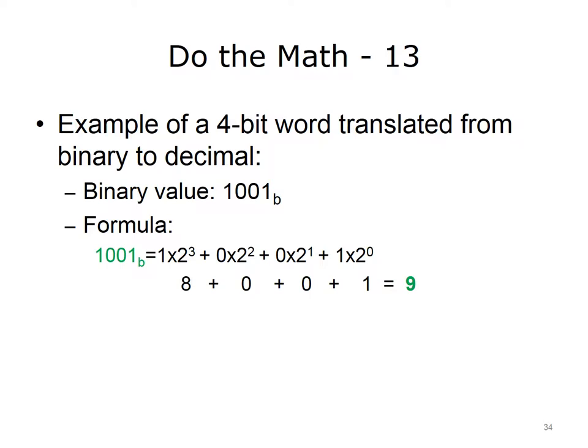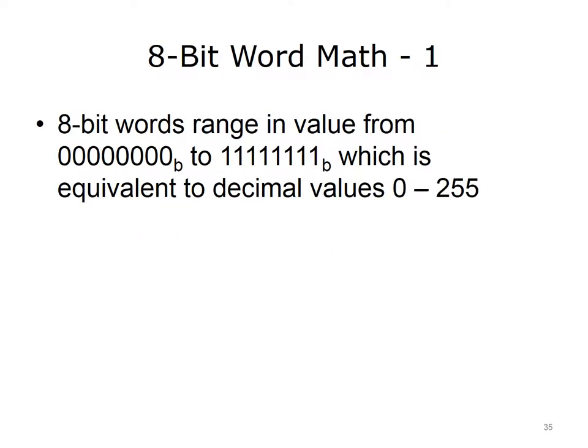The formula to calculate the decimal equivalent of the binary number 1001 is: 1 times 2 to the 3rd power, plus 0 times 2 to the 2nd power, plus 0 times 2 to the 1st power, plus 1 times 2 to the 0 power, which is equivalent to 8 plus 0 plus 0 plus 1, which equals 9. 8-bit words range in value from all 0's (the value 0) to all 8 bits being on (or 1), which is the decimal equivalent of 255.